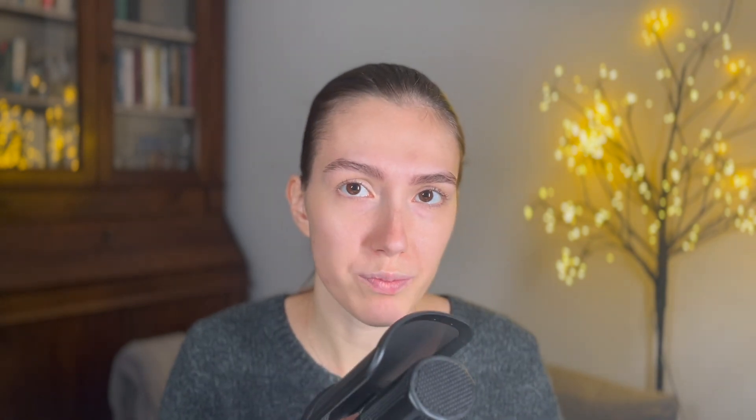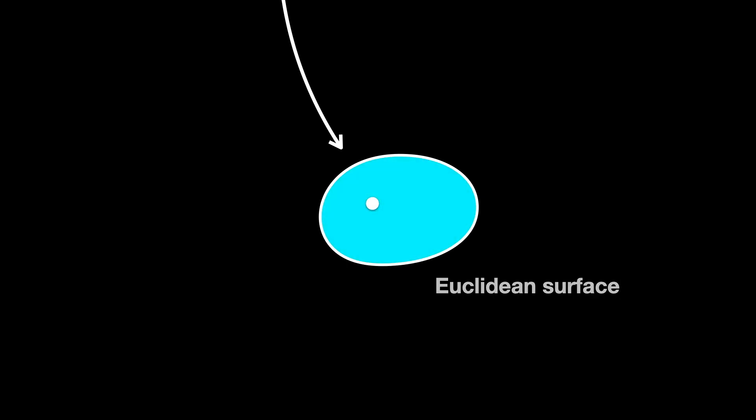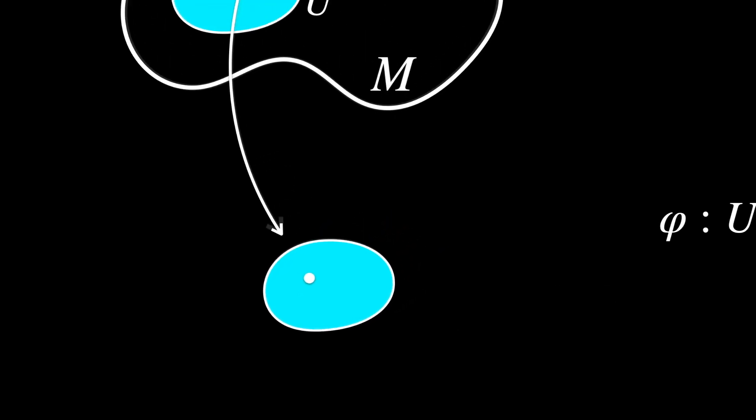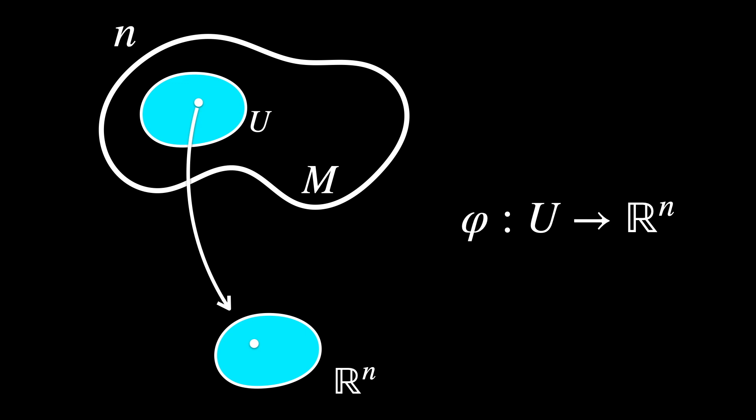So P is basically floating somewhere in U. Now let's convert or map U onto a Euclidean surface. Mathematically, this is represented as Phi from U to Rn, where Phi is a coordinate map that maps U homeomorphically to an open subset of Euclidean space Rn, meaning that it preserves the structure of the manifold locally. This setup makes it possible to do calculus and other mathematical operations in a more intuitive way, because we are using the Euclidean space.